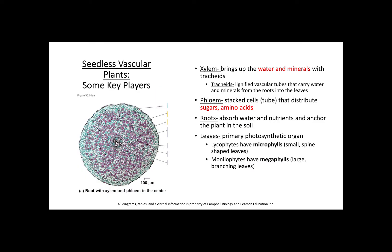Some key players in seedless vascular plants include the xylem, which transports water and minerals. The xylem contains tracheids — lignified vascular tubes that carry water and minerals from the roots to the leaves. It's important that they're lignified because that helps keep the tubes open as water is drawn up through the plant. The phloem has stacked cells that distribute sugars and amino acids throughout the plant.